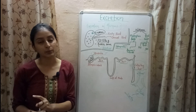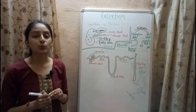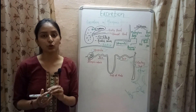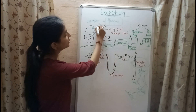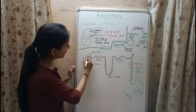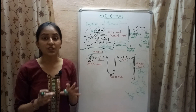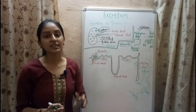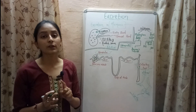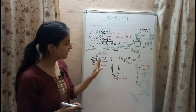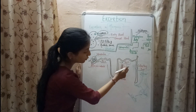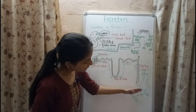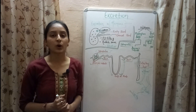To quickly revise: the human excretory system consists of a pair of kidneys, a pair of ureters, a urinary bladder, and a urethra. Kidneys contain nephrons as their functional units. Waste passes from the glomerulus to the PCT, where selective reabsorption of salts and water occurs. Excess salt, water, and urea pass to the loop of Henle, then to the DCT, then to the collecting duct, then to the ureter, urinary bladder, and finally out through the urethra.